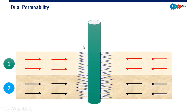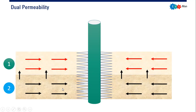At early time we have production in both the first layer and the second layer, with no pressure difference between them. But as the first layer, with higher permeability, drains the reservoir more rapidly than the second layer, a pressure difference develops. This induces cross flow from layer two — which has the higher pressure after drawdown — to the first layer. That is the behavior of the dual permeability model: a stratified reservoir with different characteristics and cross flow between layers.